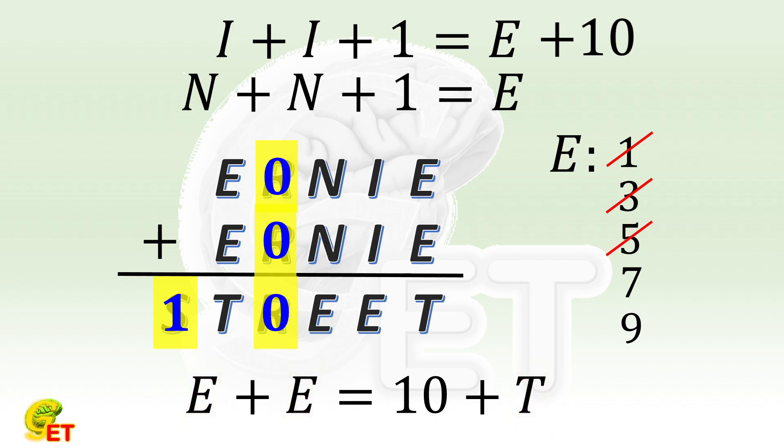7 is in fact the correct answer, we'll get back to that later. If E is 9, I is also 9, also doesn't work. So E can only be 7.